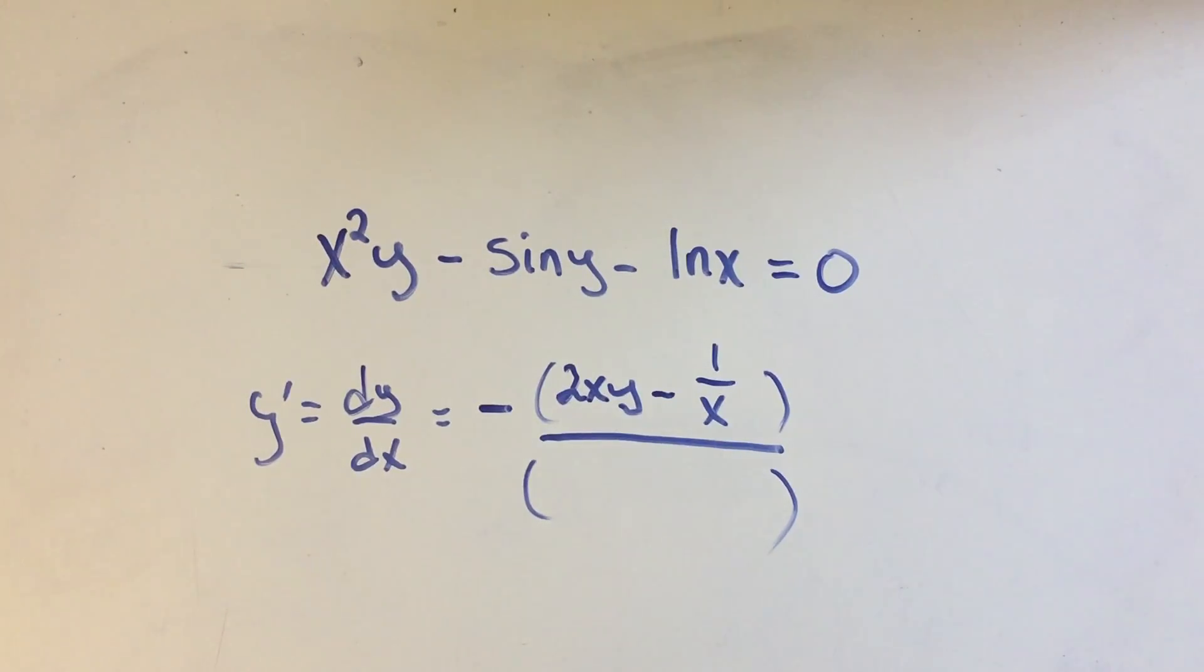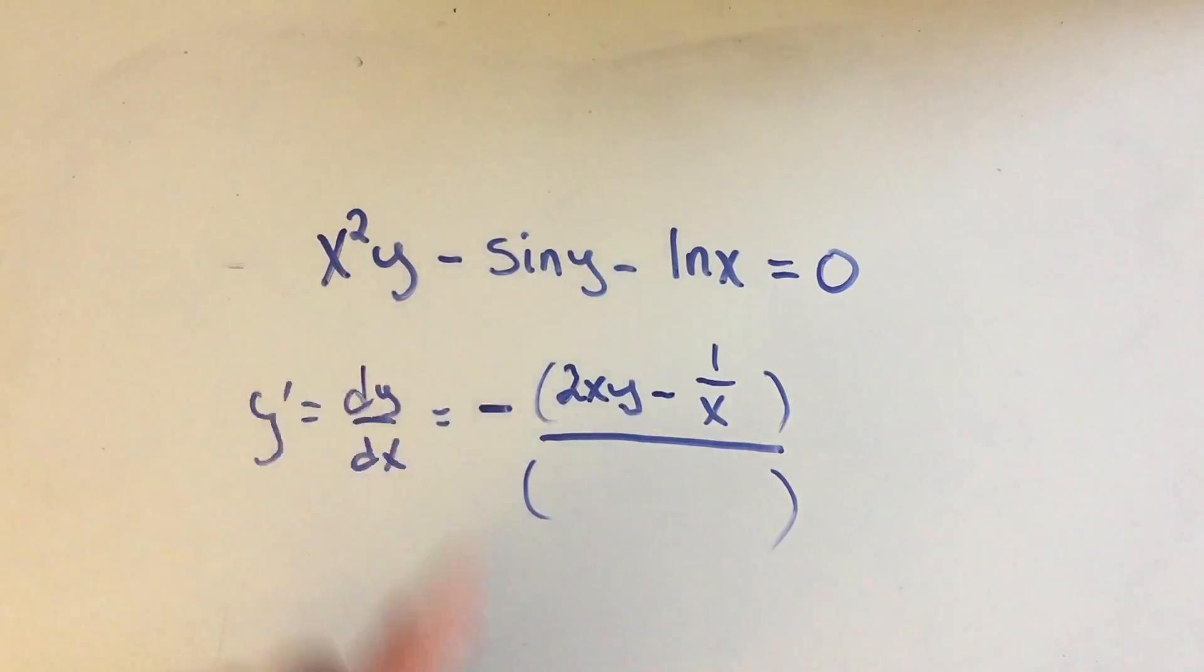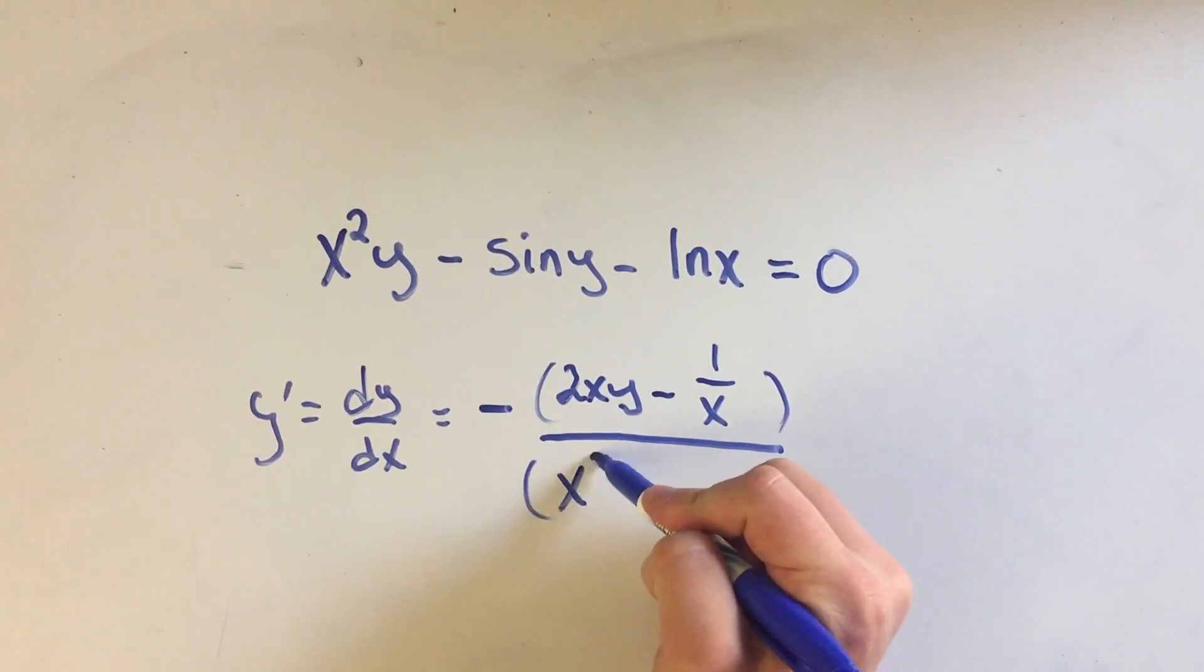On the bottom, I do the same thing, but for y. I'm gonna take the derivative of y, treating x like a constant. So here in this first part, if this was just 5y, the derivative would just be 5, right? A constant times a variable, the derivative is just the constant. So the derivative of x squared y, treating y like a constant, is just x squared.